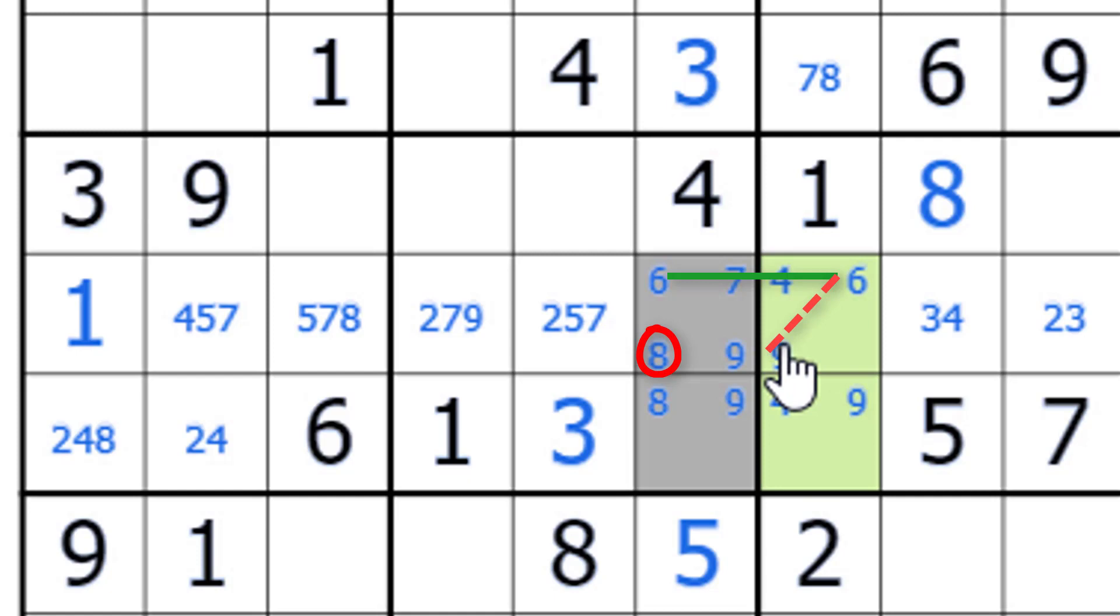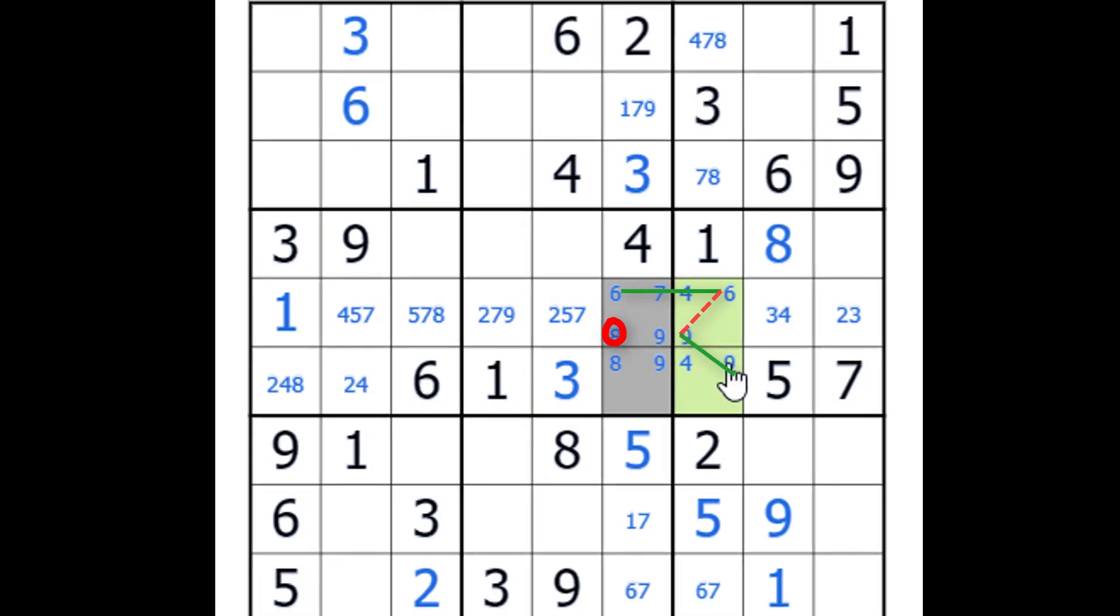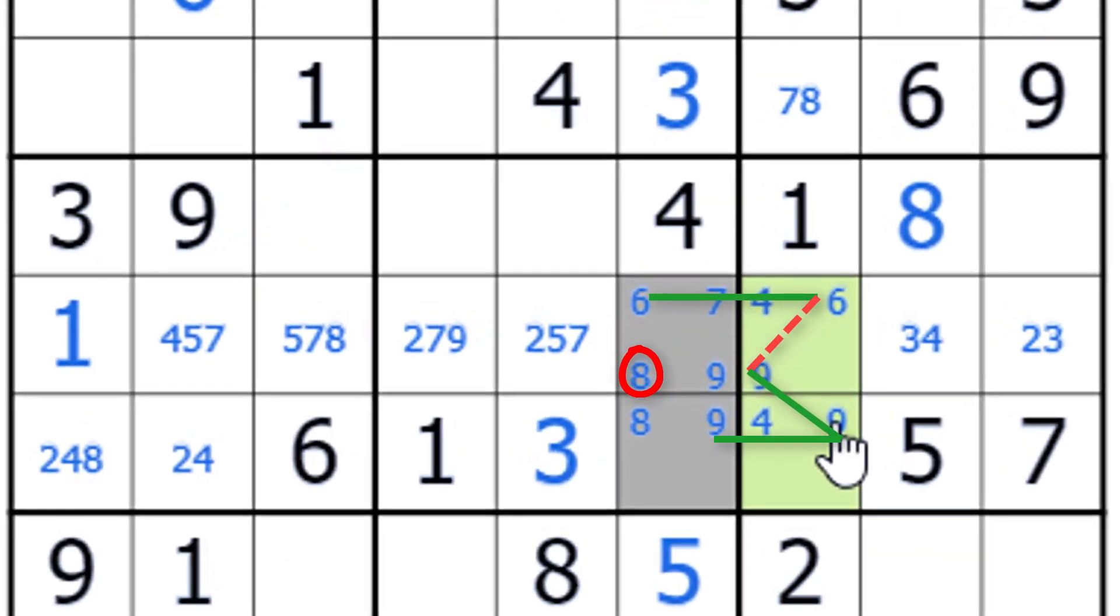We go from that nine to this nine, which is a strong link because there's only two nines in that column and also in the house, believe it or not. Then we go from this nine over to this nine here, which is also a strong link. And we go finally from that nine to an eight. And that is the chain.